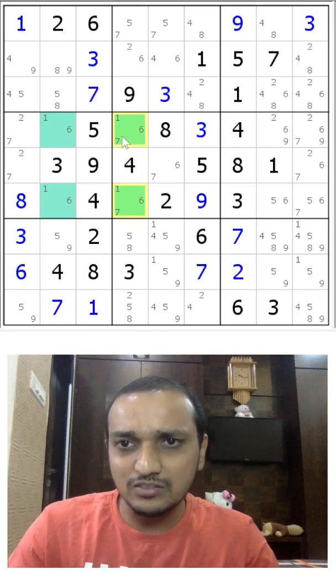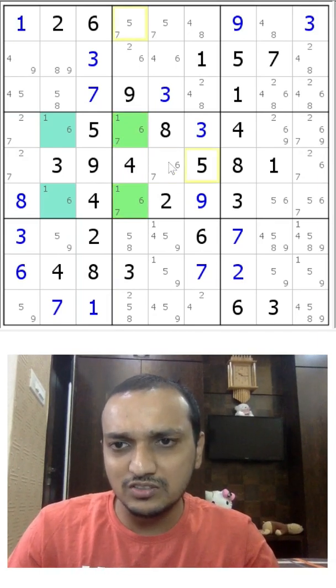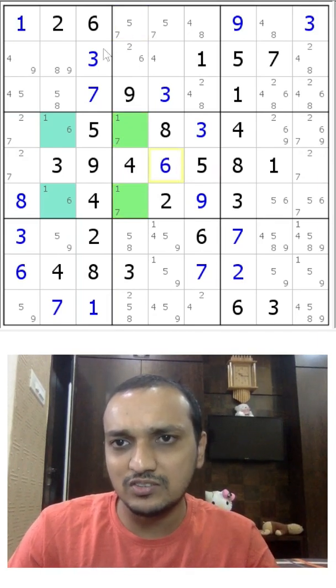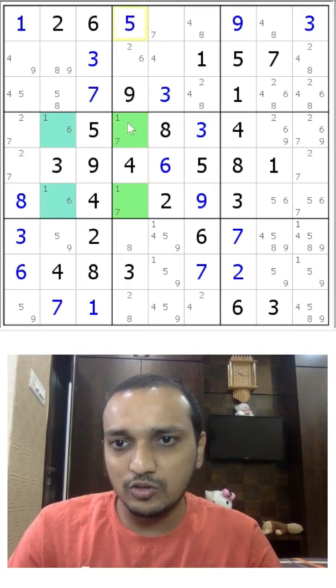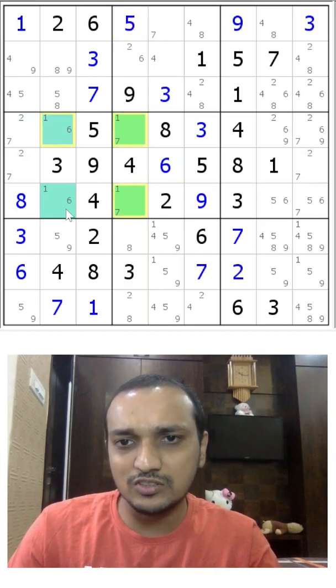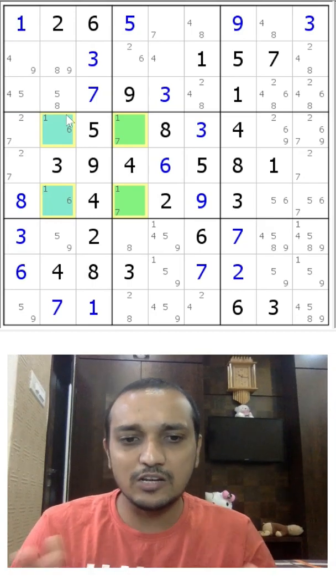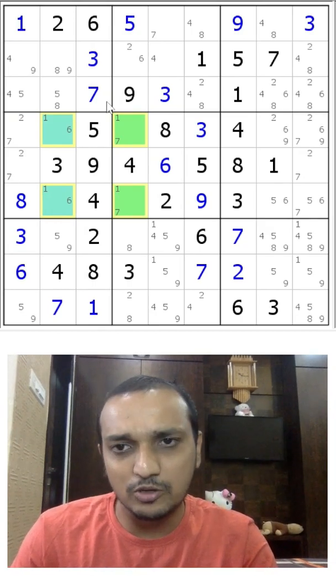Right, and that means you can eliminate 7 from both of these cells, and this cell would have to be a 6 and this cell would have to be a 5. So if you don't have a 7 in these two cells, you will have a 16-16 pair here in these two boxes and you won't be able to disambiguate the numbers.